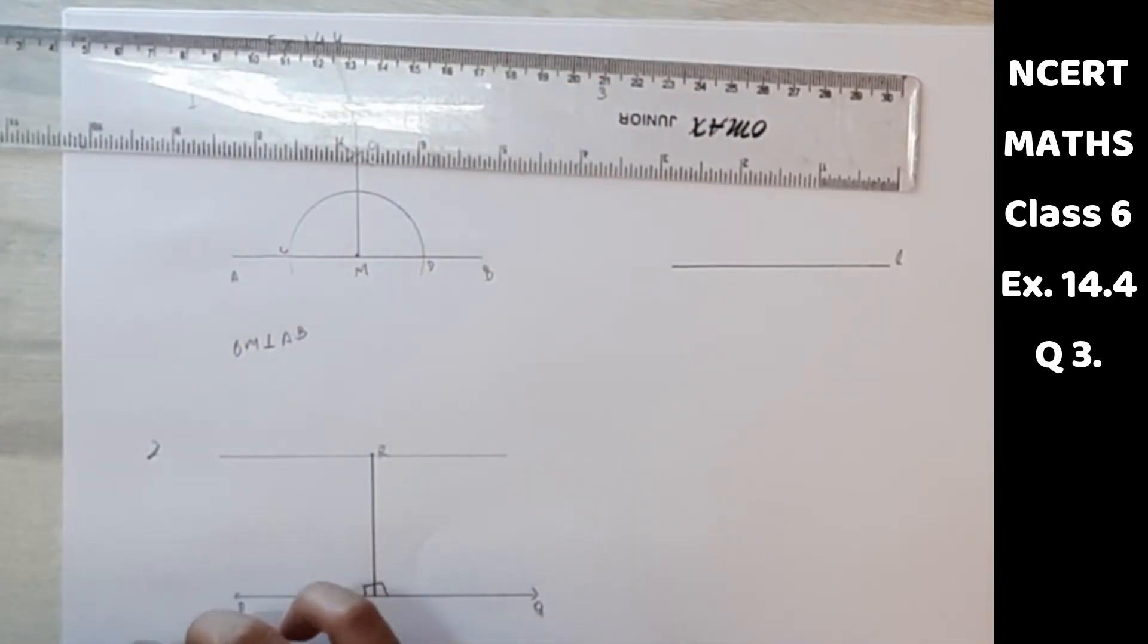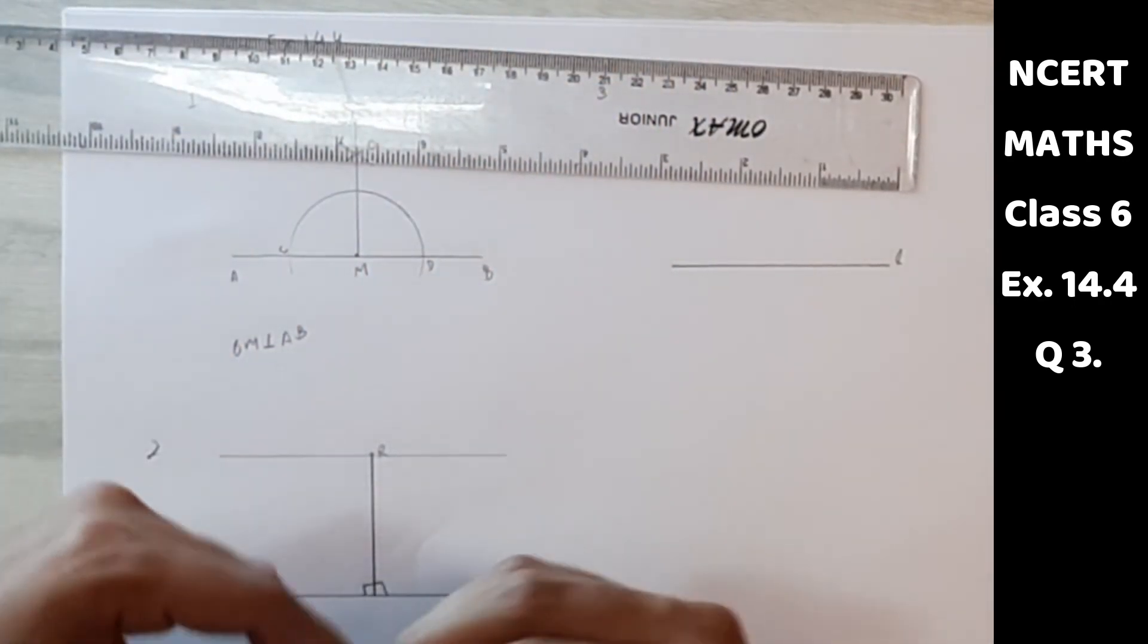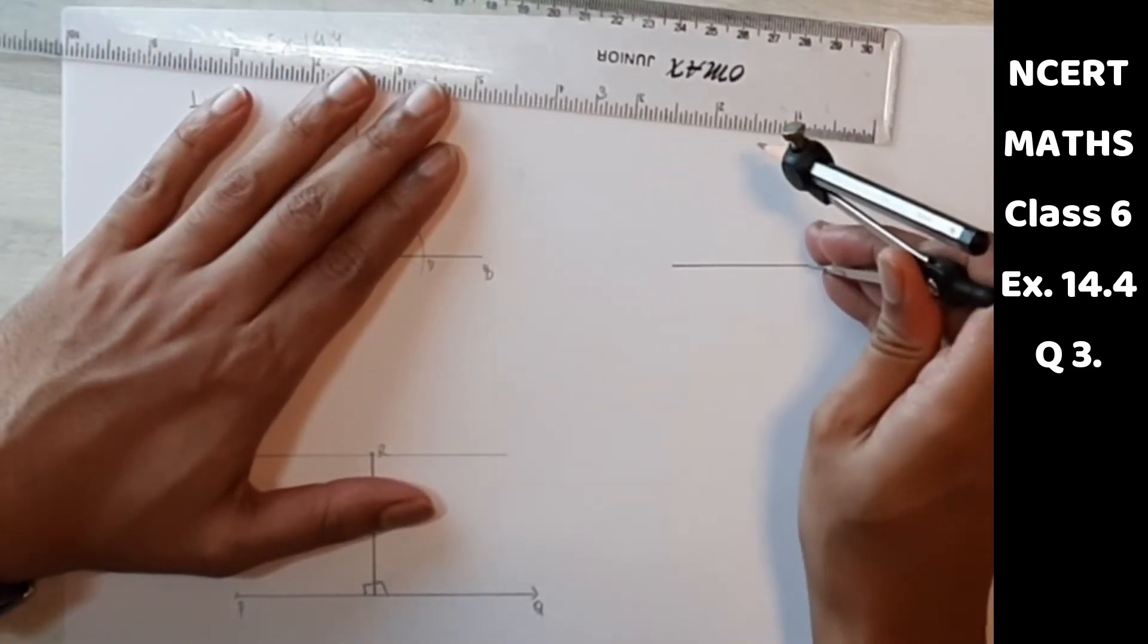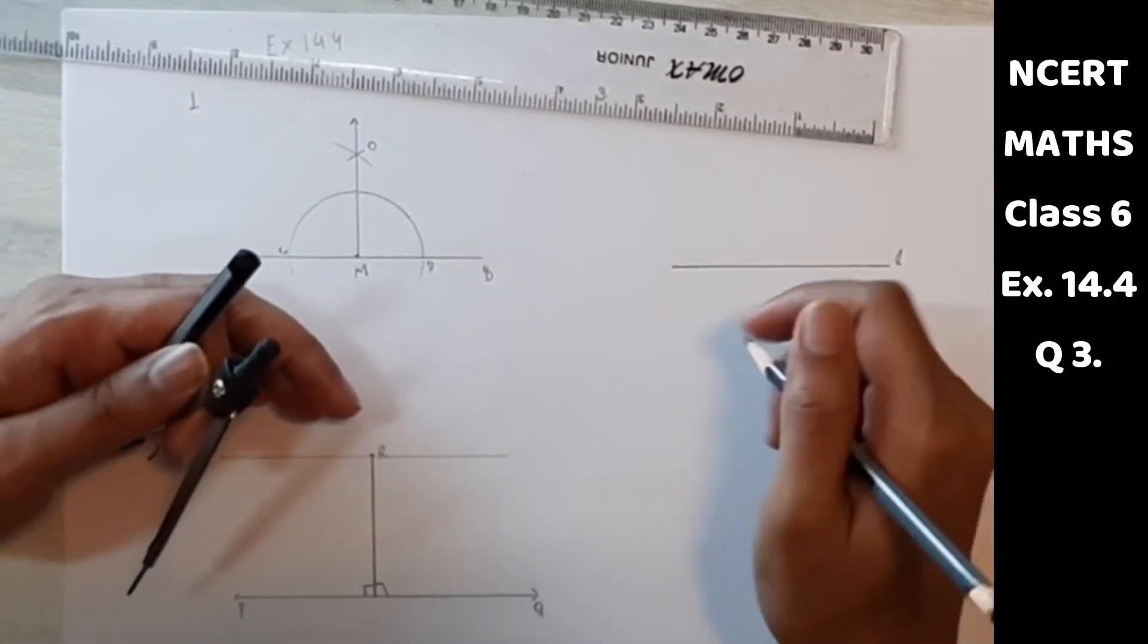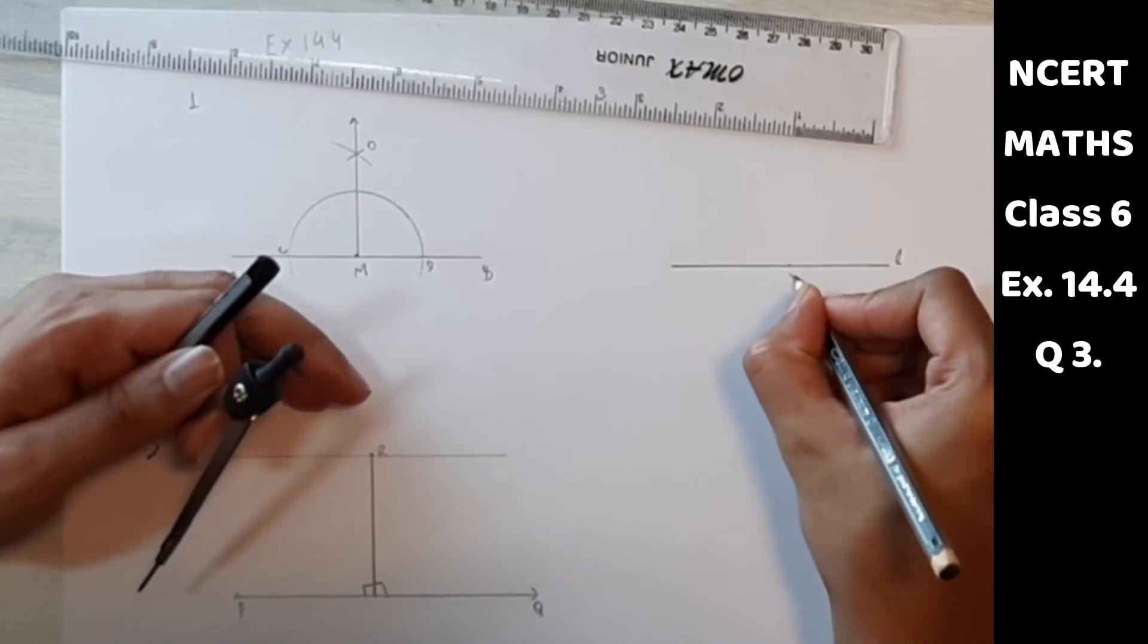So we will make another 90 degree. So let's say this is the point X.